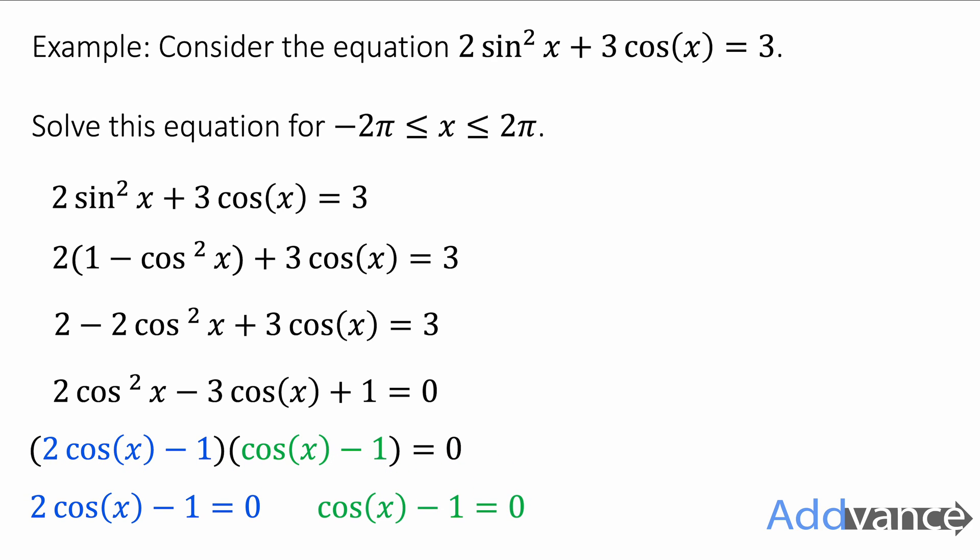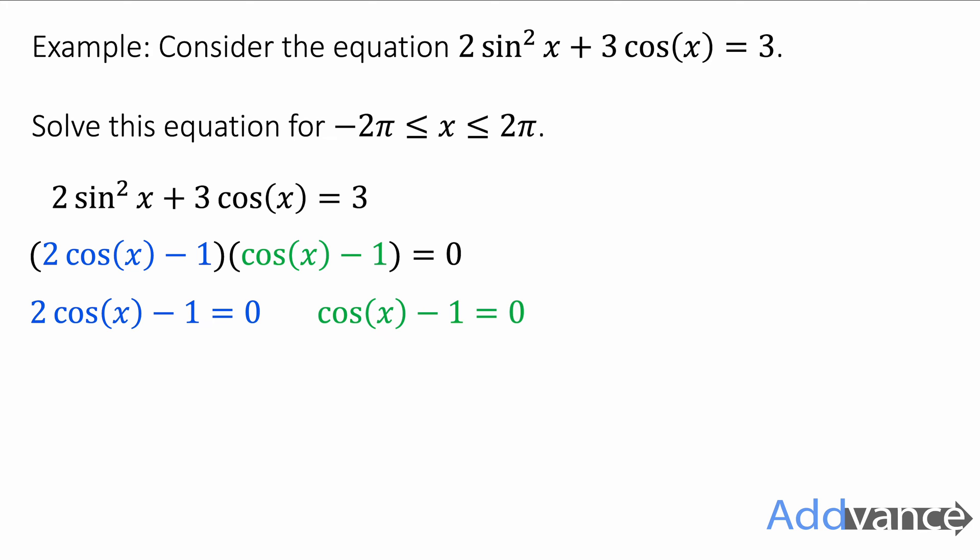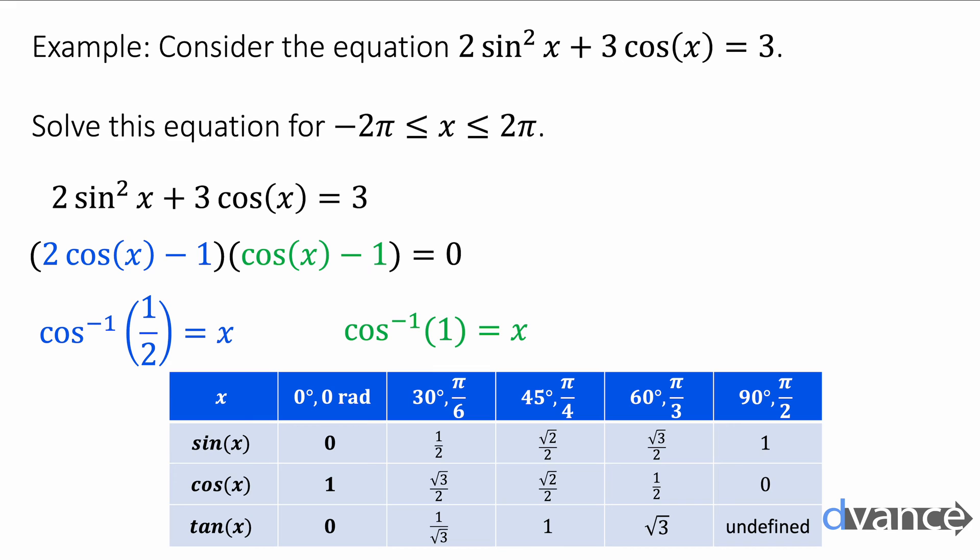The first bracket must be equal to 0 or the second bracket must be equal to 0 because that's how quadratics work. I've got something times something is 0, therefore one of those somethings must be 0. I'm going to solve when these are equal to 0. So I move the -1 to the other side and then divide by 2, I get cos(x) = 1/2. I can take the inverse cos of 1/2 to get x. Similarly on the other side I get cos(x) - 1 = 0, so cos(x) = 1, and I do inverse cos of 1.